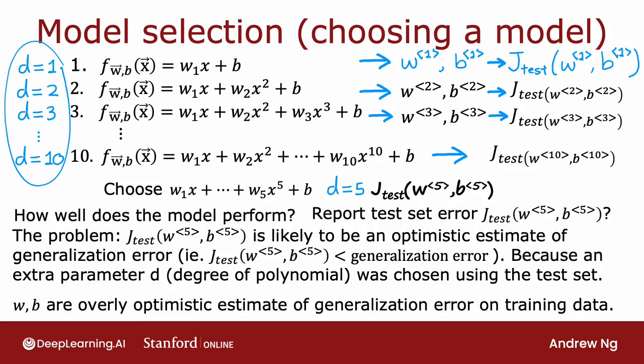...it turns out that if you choose the parameter d using the test set, then J test is now an overly optimistic—that is, lower than actual—estimate of the generalization error. So the procedure on this slide is flawed, and I don't recommend using it.